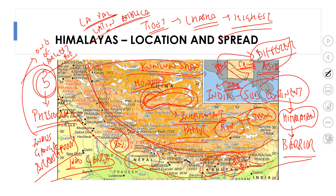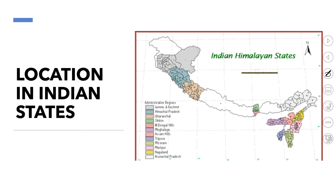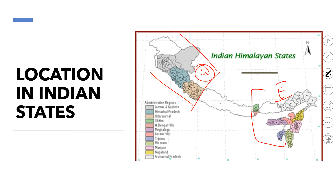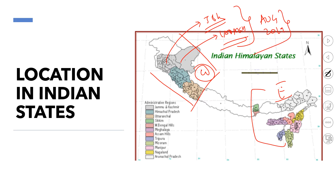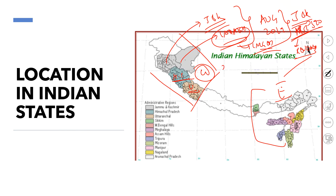In Indian states, the Himalayas can be subdivided into the western Himalayan portion and the eastern Himalayan portion. In the western Himalayan portion, there are two union territories — Jammu and Kashmir and Ladakh — recently formed in August 2019 after the bifurcation of J&K state when Article 370, which gave special status to J&K, was revoked. Ladakh is the largest UT of India. South of these two UTs are Himachal Pradesh and Uttarakhand.